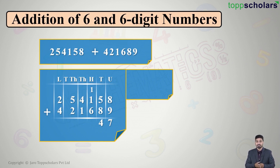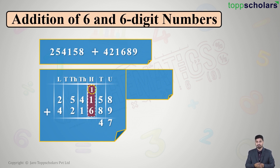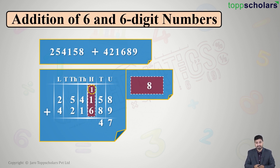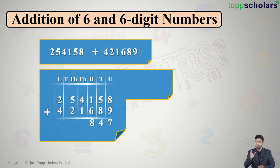In the hundreds column, we have the one that was carried forward, added to one and six. So one plus one plus six equals eight — a single digit number. We write it directly under the hundreds column and move ahead to the thousands column.